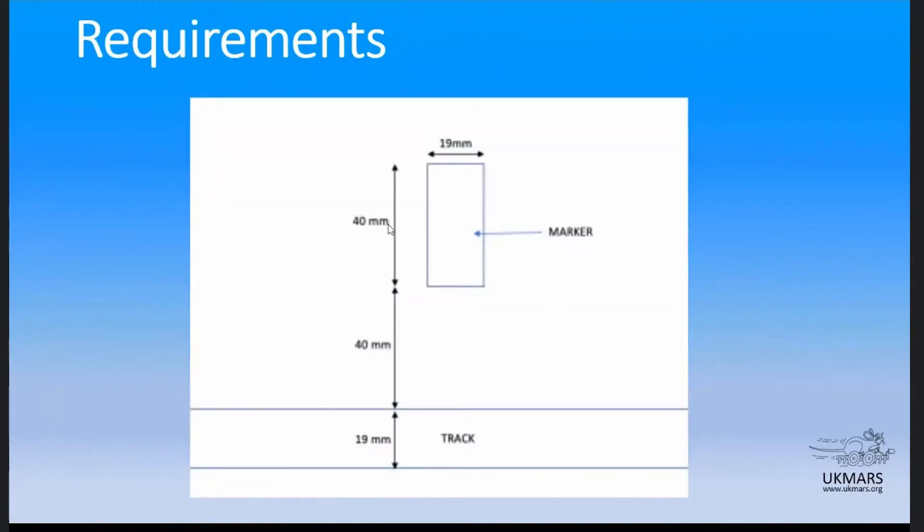This looks a bit fuzzy because it's blown up from the rules but this is basically the configuration of a full-size line. A 19 millimeter track with 40 millimeter markers 40 millimeters away from the side of the line and that's the line that we follow.